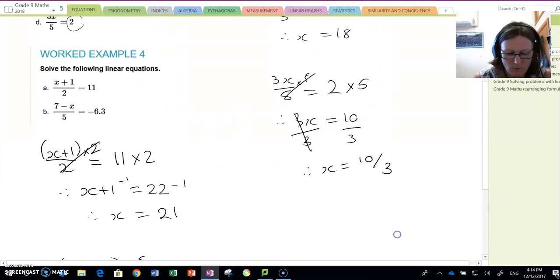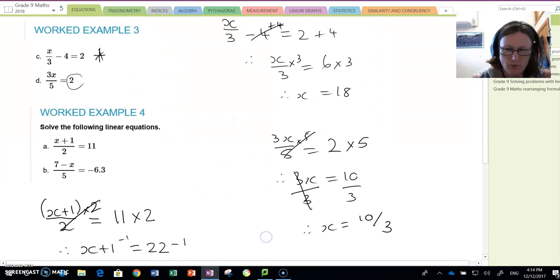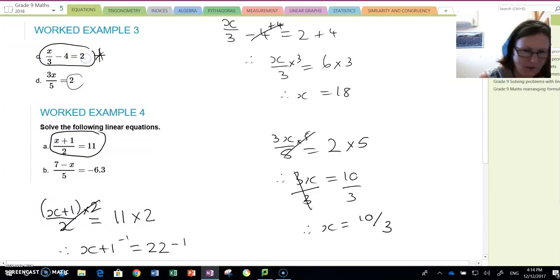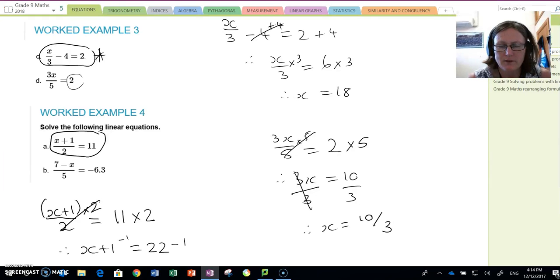So just with this type, it's really important that you undo things in the right order. And to me, the easiest way to explain it is look at the difference between this type and this type. x plus 1 is a package because it's all above 2. So you keep the package together and you undo the 2 first.